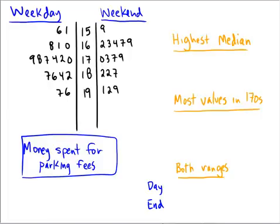This particular graph is about money spent for parking fees on either the weekday or the weekend. Starting from the bottom up, we're going to answer three questions: which group has the highest median, which has the most values in the 170s, and we'll find the ranges of both groups.